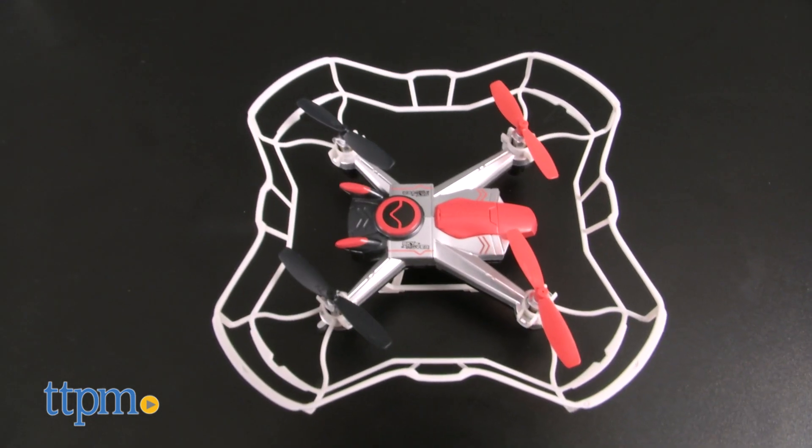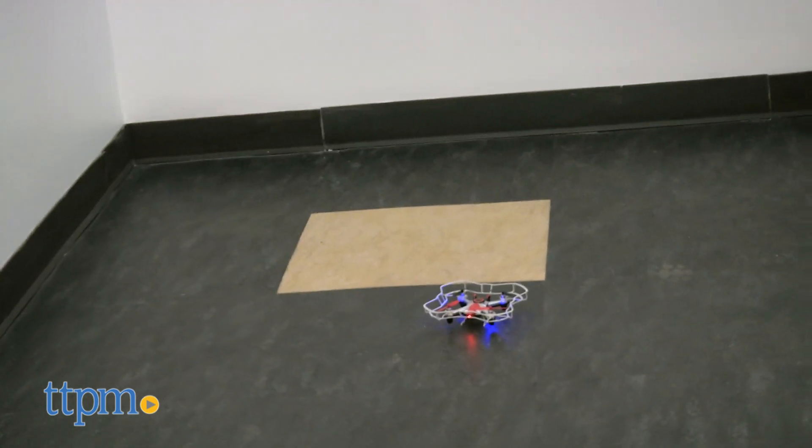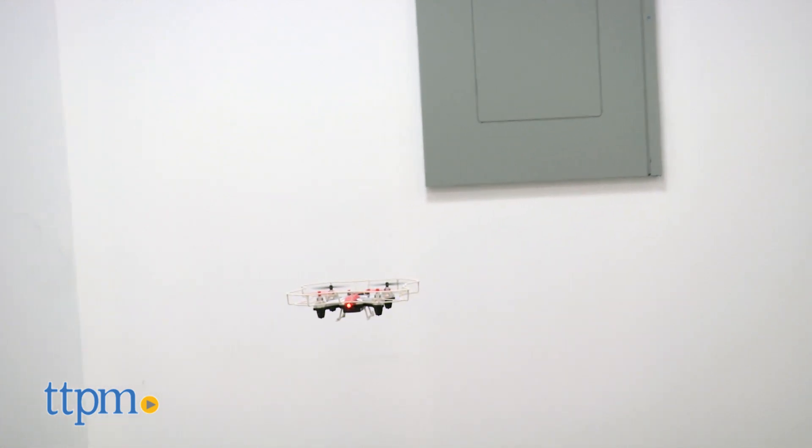With any drone, you start with a hover. Even a year ago, it was a challenge, sometimes downright impossible, to get an even, steady hover. It took practice. This generation, though, has fixed all that, which Sky Rover calls Smart Hover.